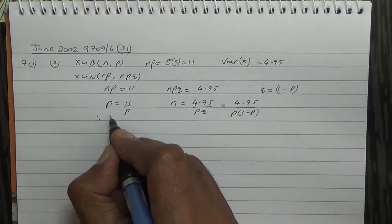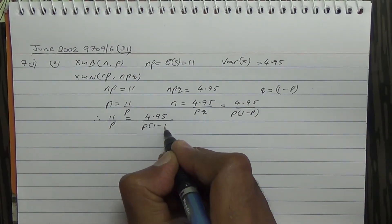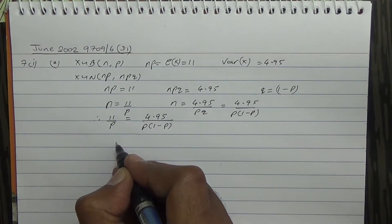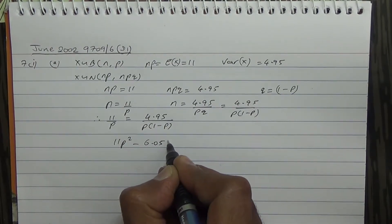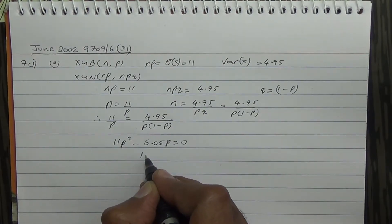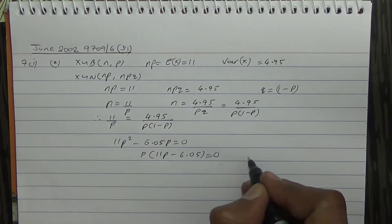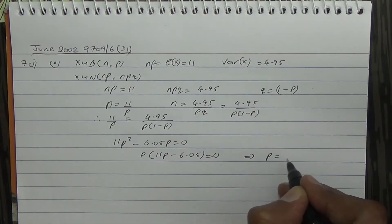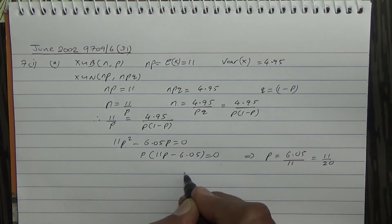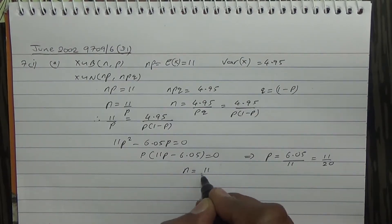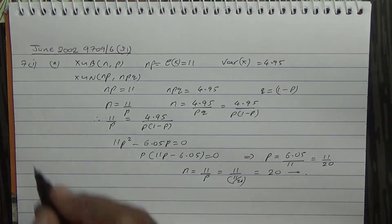So 11 over P is equal to 4.95 divided by P times (1 minus P). Rearranging gives the quadratic equation 11P² minus 6.05P equals 0. Factorizing: P times (11P minus 6.05) equals 0. Therefore P equals 6.05 divided by 11, which is 11 over 20. That means N equals 11 divided by (11 over 20), so N is equal to 20. That's part A.